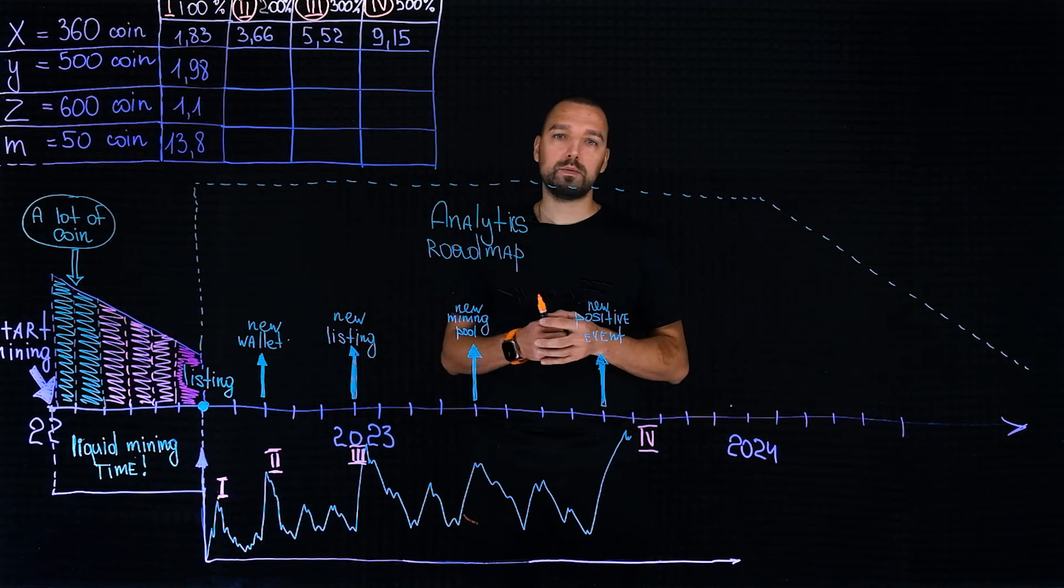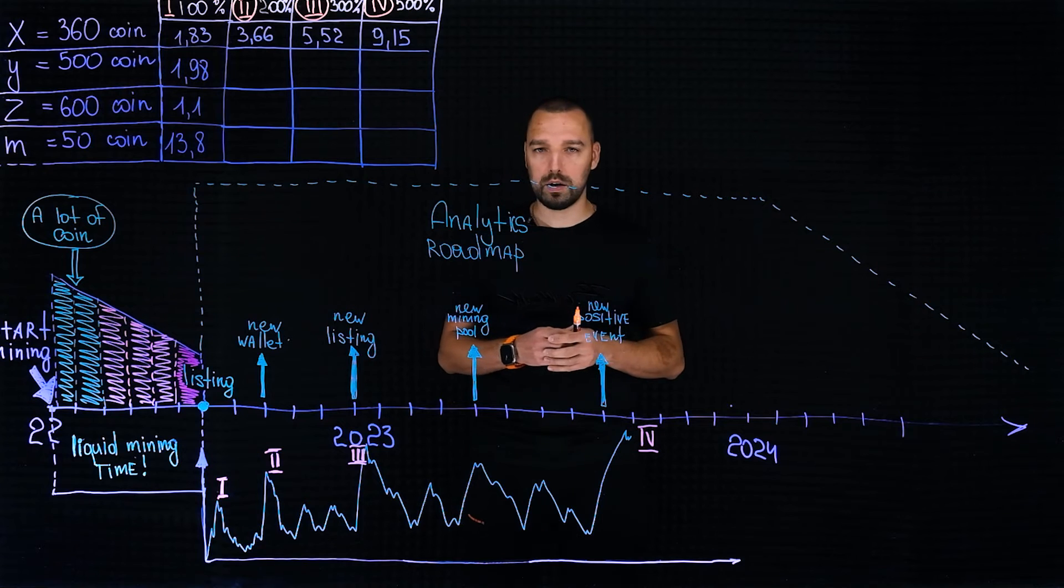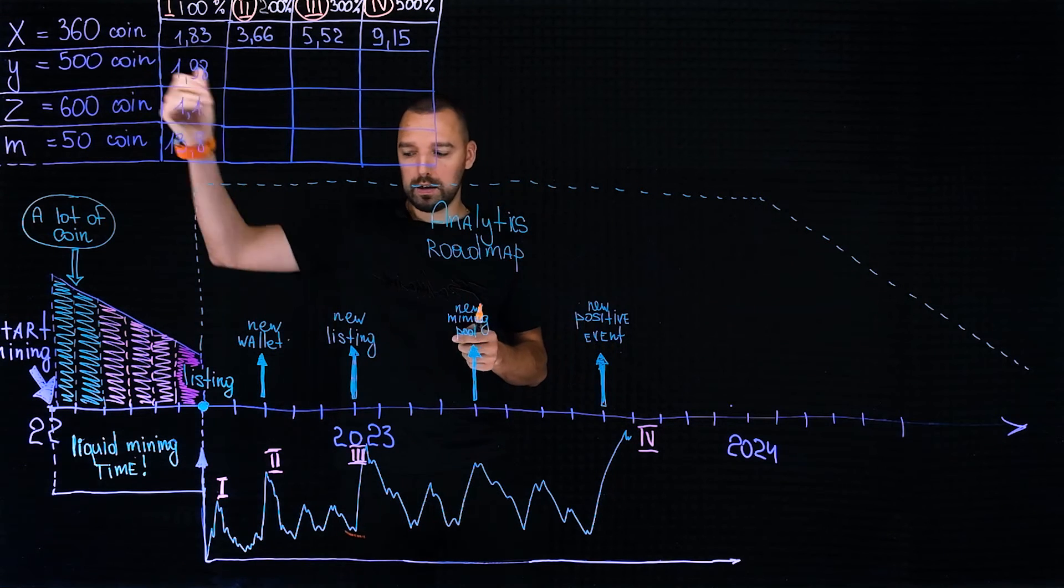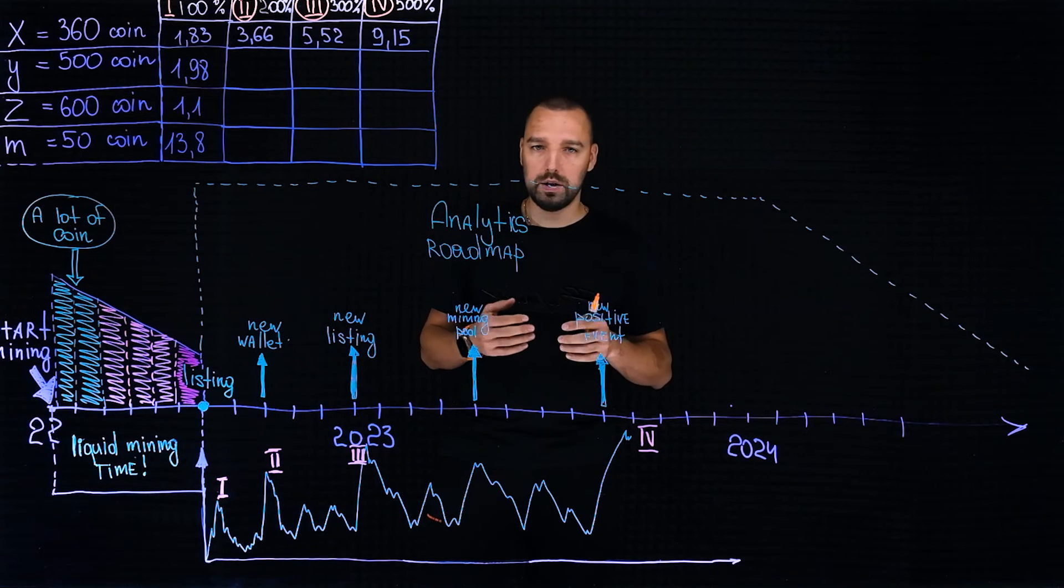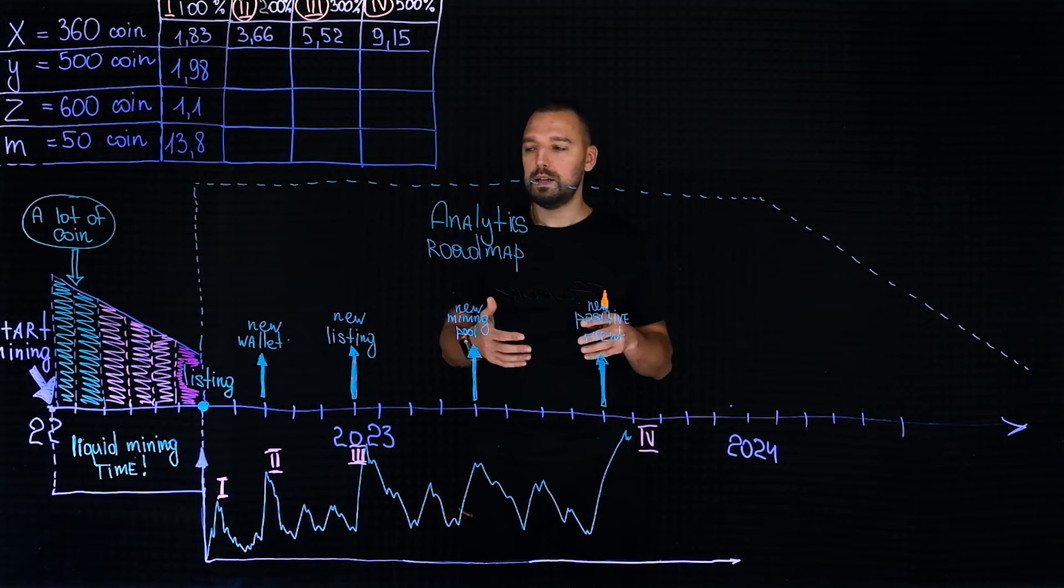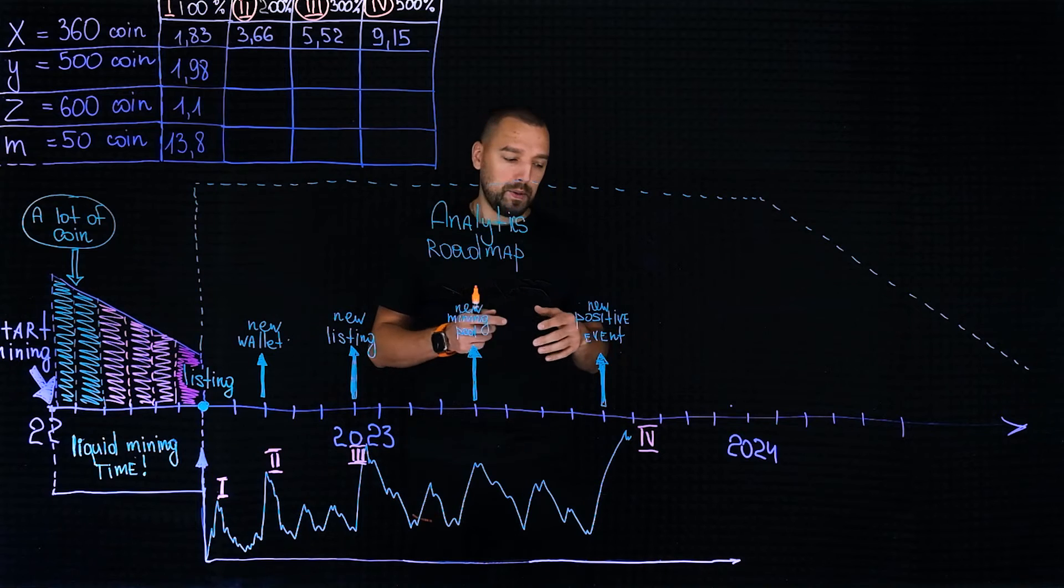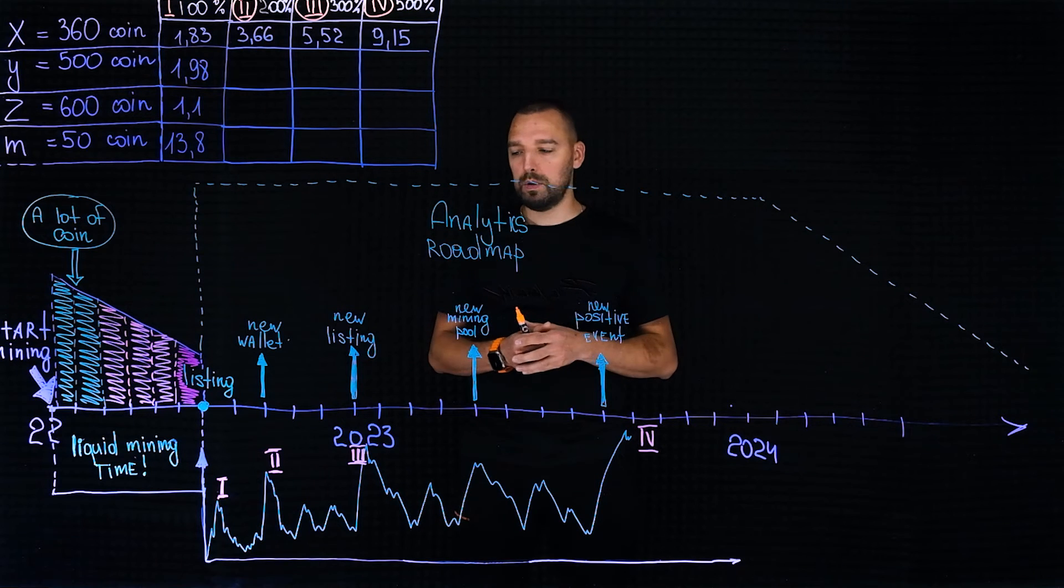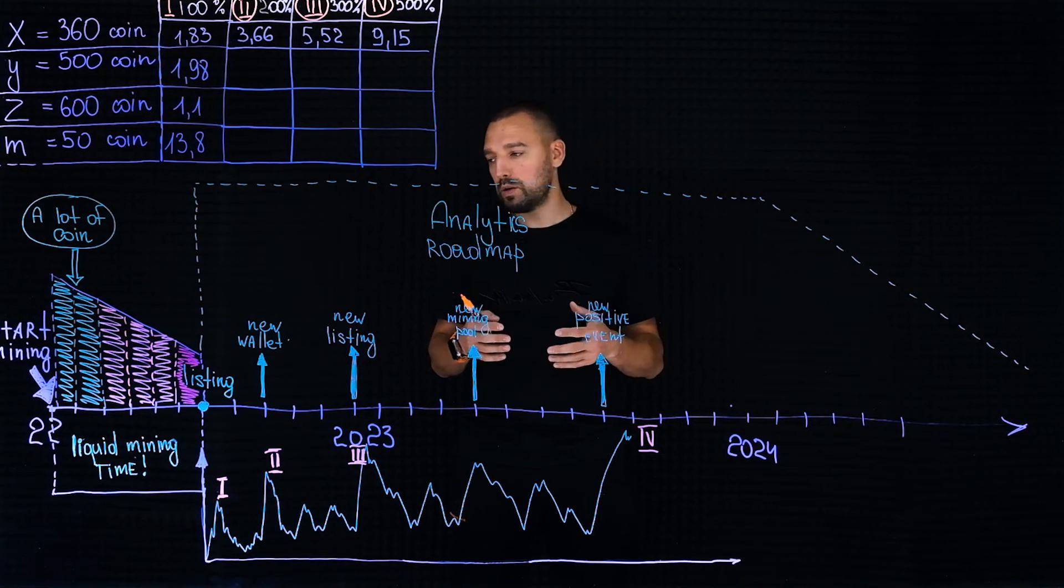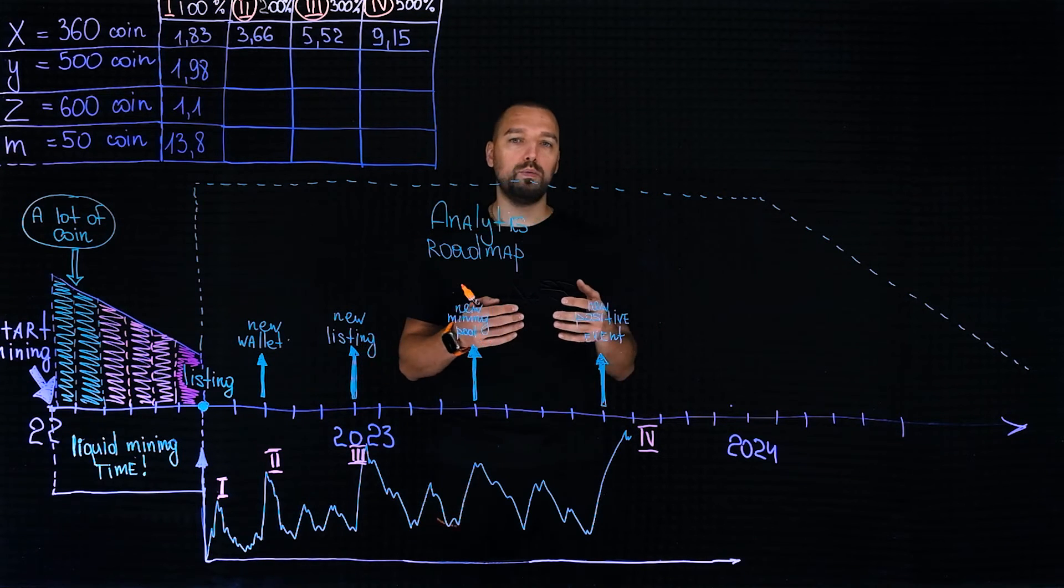But today we are considering the conditions when the project still passed the selection of our analytics department and this is the result of their work. According to the roadmap of the X project, we observe that since the start of the listing, a large number of different positive aspects are planned, such as entering new exchanges, creating their own wallets, integrating into mining pools, and maybe even creating their own mining pool, merging with some large corporations, with banks. Not all these events will be visible in the roadmap, but in the future as the project develops, we will monitor social networks, messengers, how the community develops in the project, and all the positive moments that can prompt the next growth of the coin. They will be recorded in our news portals.